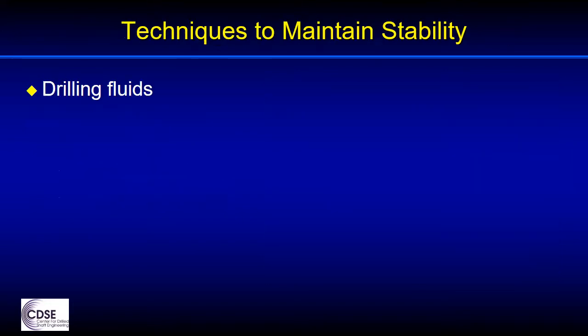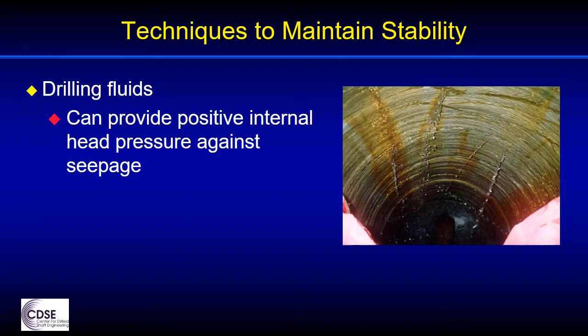Fluids help to provide stability by counteracting the head pressure of the groundwater that would tend to flow into the hole. If the soil were sandy, the inflow of water that you see here in this photo would cause collapse of the hole. The seepage that you see might appear to be small in volume, but the pressure could be detrimental to the stability and tend to wash out uncemented soils, especially around the bottom of the casing. Loss of soils at the top of the rock near the bottom of the casing could produce a void outside the casing, which could result in ground subsidence or loss of support around the casing.